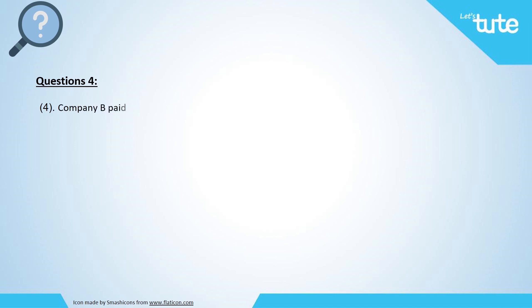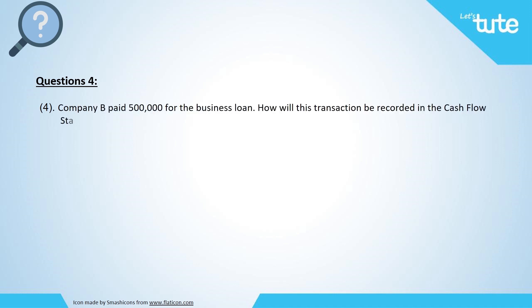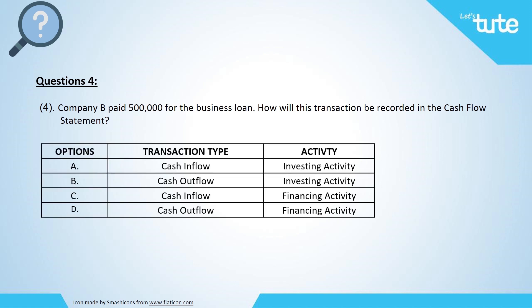Question four: Company B paid $500,000 for a business loan. What type of transaction is this, and under which heading will this be displayed in the cash flow statement? Option A: a cash inflow under investing activity. Option B: a cash outflow under investing activity. Option C: a cash inflow under financing activity. Option D: a cash outflow under financing activity. A company paying for a business loan is clearly a cash outflow transaction, and this type of transaction would come under the financing activities heading.